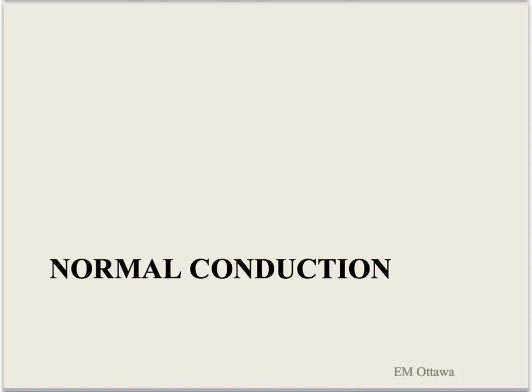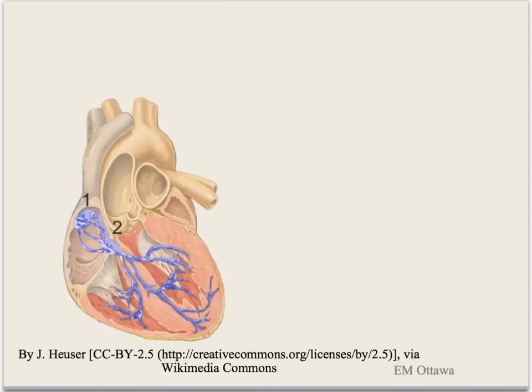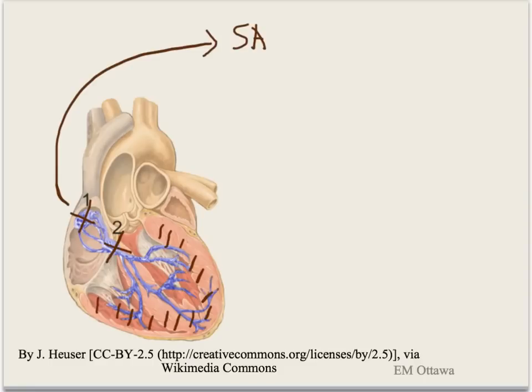Normal heart conduction. There are three pacemakers in the heart: SA node, AV node, and the ventricles. The SA node is the normal pacemaker of the heart. It beats at 60 to 100 beats per minute.